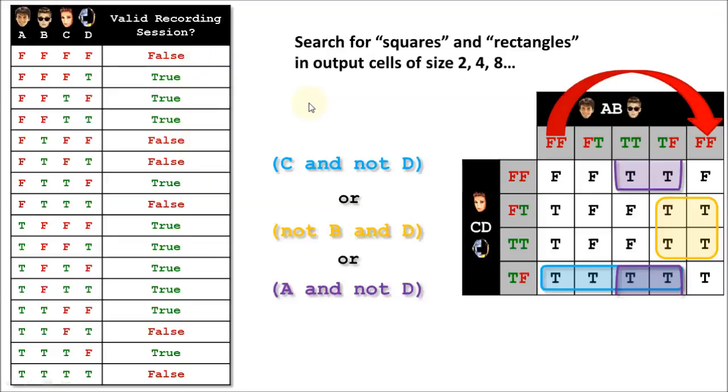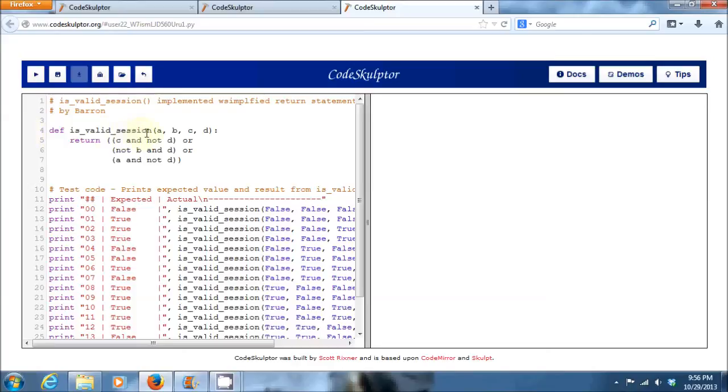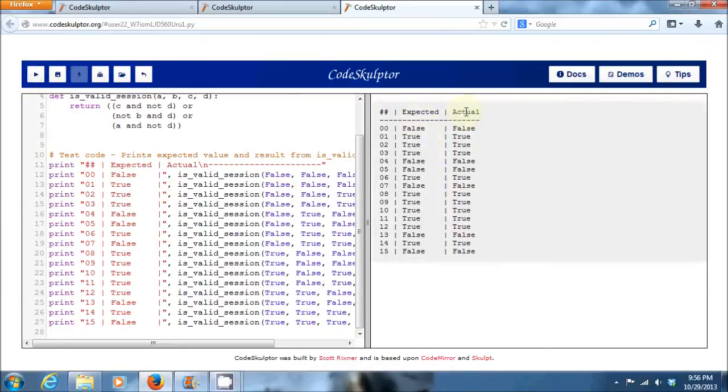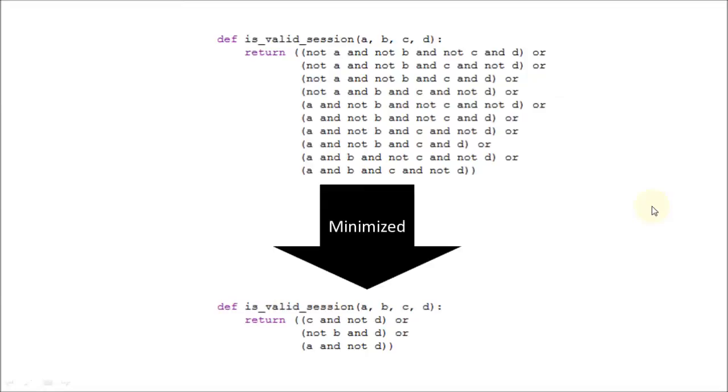In this final version of the is valid session function, we take those three minimized expressions that we derive from the Karnaugh map, and we combine them with ORs. And to demonstrate that this produces the exact same value as we expect from our truth table, I'm going to run it against the exact same test code I ran the other two versions of the function. And here you can see, sure enough, the actual output and the expected output match case for case. To give you a little more appreciation for the value of Karnaugh maps, I want to show you a side-by-side of our original sum of products function, and then the minimized version. So in the original, we had 10 different AND statements, each with four variables. And through the Karnaugh map method, we were able to reduce that down into three AND statements, each with only two variables. I think that's pretty cool.